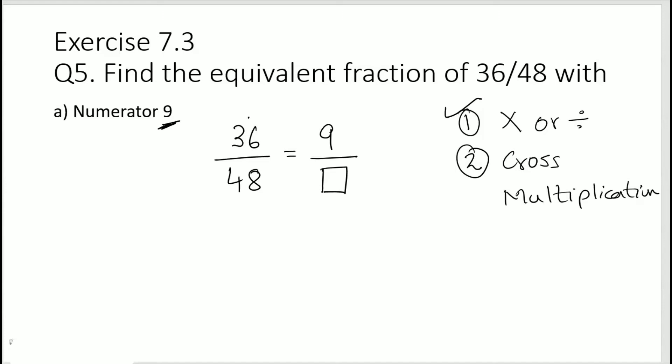Now 36 is given on the left hand side and 9 is given on the right hand side, so there is no way we can multiply 36 by some number to get 9. This is a smaller number, right? So whenever we are trying to find out the equivalent fraction of a big number to a small number, always use division.